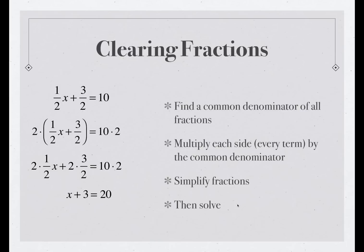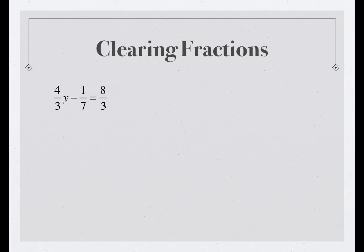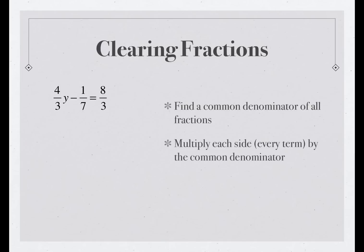Let's take a look at another example. Now in this example, there are two different denominators. So the first step, we're going to find a common denominator for all the fractions, and in this case, the least common denominator is going to be 21, or 7 times 3. Next, we're going to multiply each side of the equation, every term by the common denominator, simplify and solve.